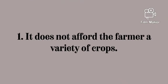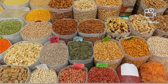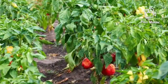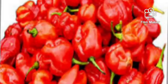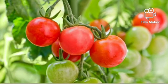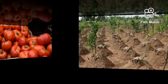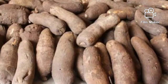What are the disadvantages of this cropping system? The first one is it does not afford the farmer a variety of crops — the farmer does not have a choice of many crop products. What he plants is what he harvests. If a farmer grows pepper, he only gets pepper. If he grows tomatoes, he only gets tomatoes. If he grows yam, he only gets yam tubers — unlike mixed cropping, which affords the farmer a variety of crops.